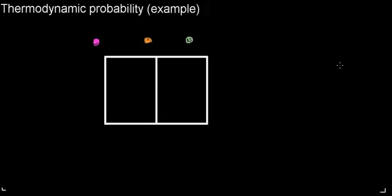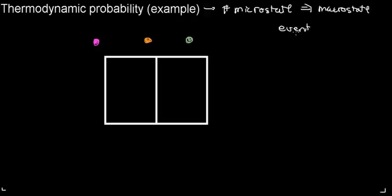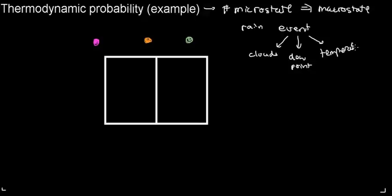Thermodynamic probability is the number of microstates associated with or belonging to a macrostate. Think of it this way: there is an event, and in order for this event to take place, certain characteristics need to occur. For example, in order for it to rain tomorrow, I need certain clouds, a specific dew point, maybe a specific temperature — and if all these microstates occur just right, then I will have this macrostate or event occur.